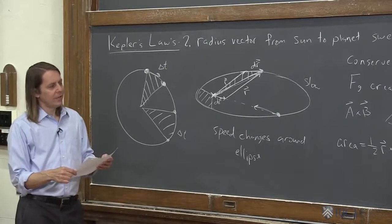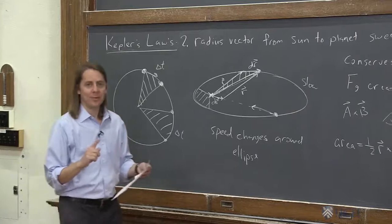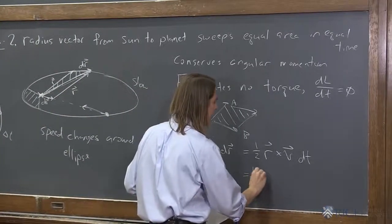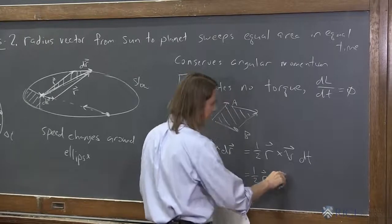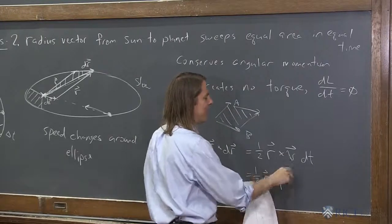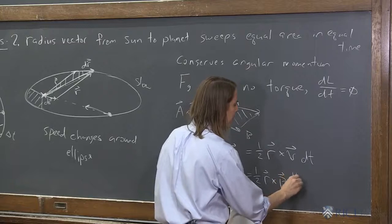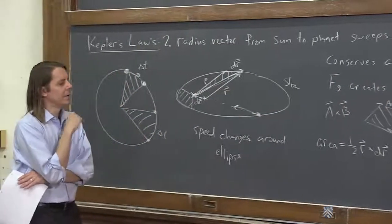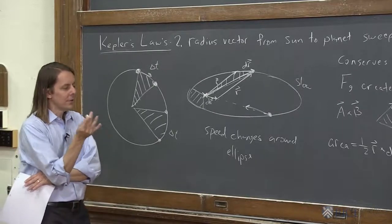And then what else could we say? Well, r cross v doesn't help us, but r cross p helps us, right? So why don't we say this? It's equal to one half r cross p if we multiply this by m. So we have to do that one over m. So we have, now we have a dt over m here. Okay. And what is r cross p? The angular momentum.